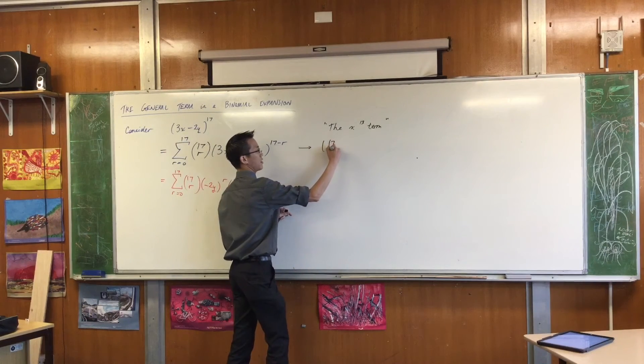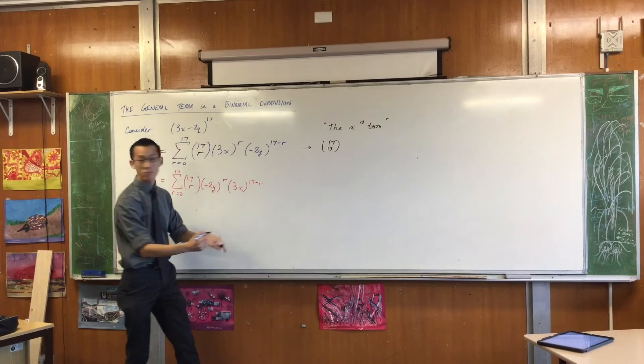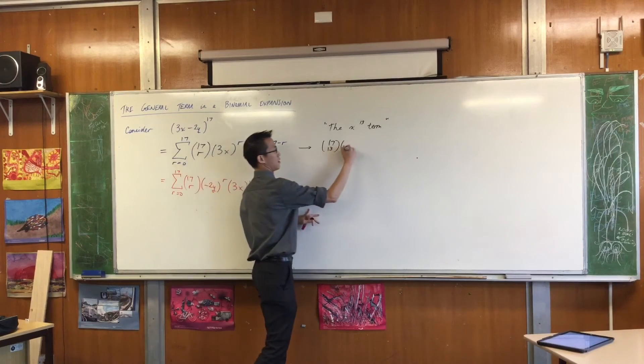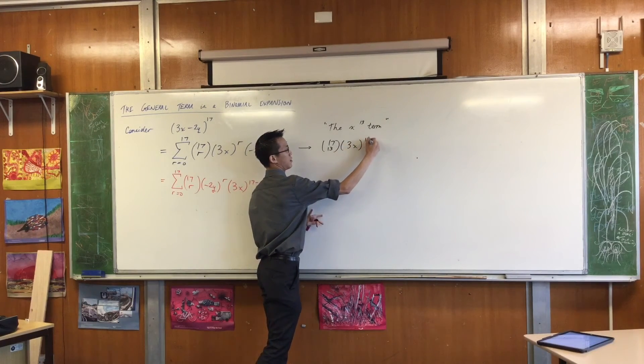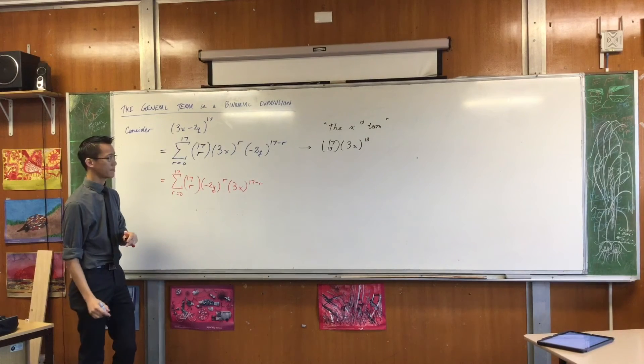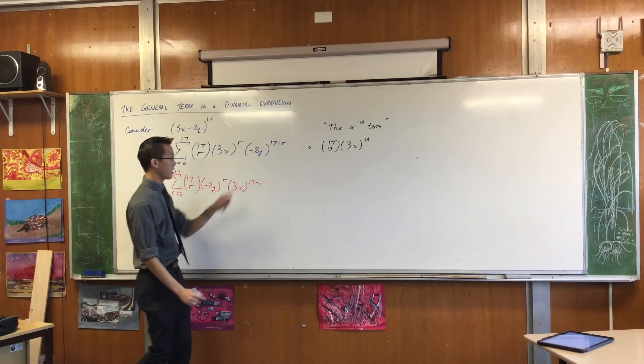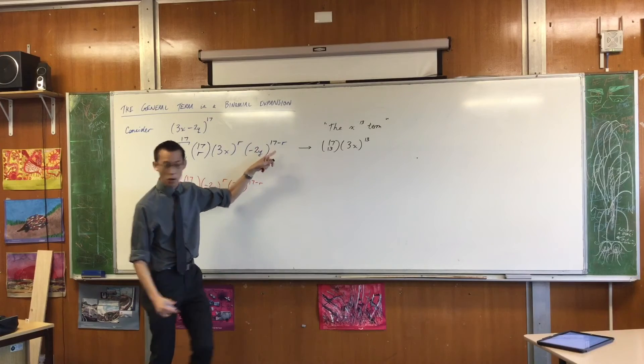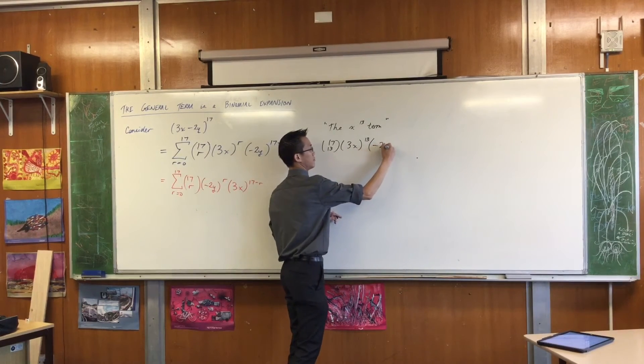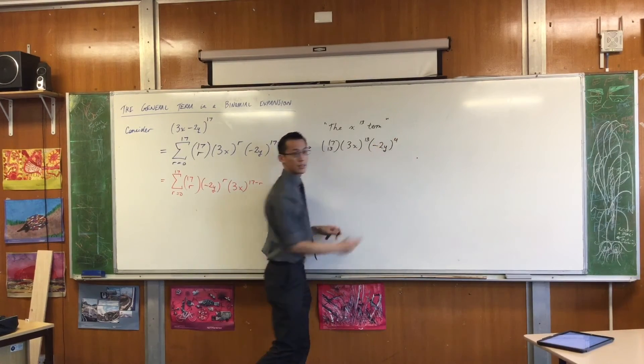I'm going to say 17 choose 13, yes? 3x to the 13th, what will the term on the end be? Negative 2y to the 4.